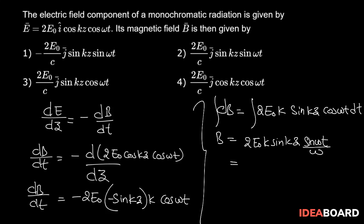So B will be 2E₀k/ω sin kz sin ωt, where ω/k is nothing but speed of light.